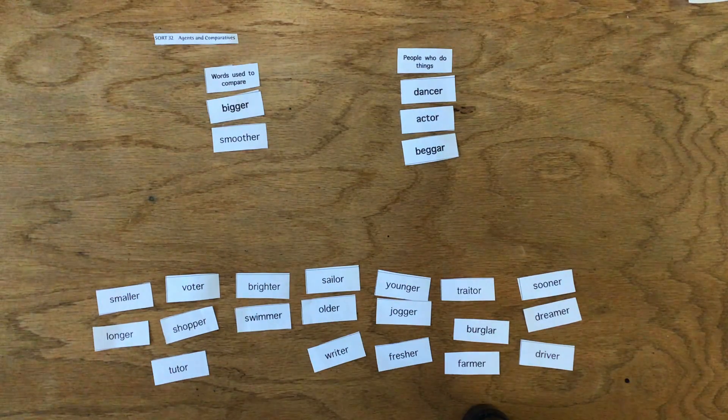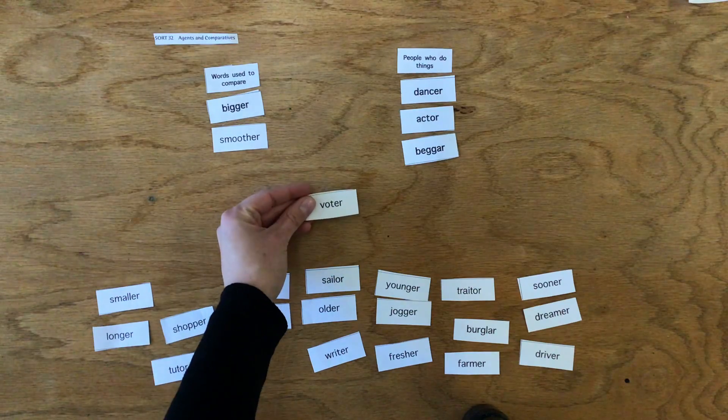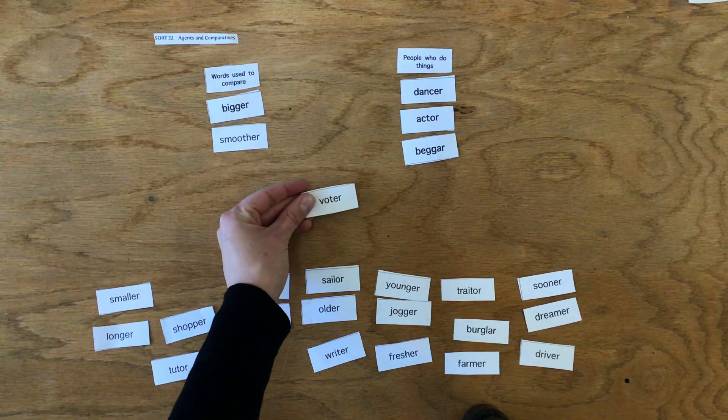Let's put these in categories. A voter is somebody who votes.